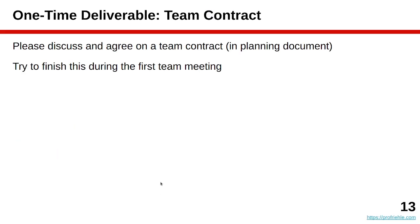The team contract is written in the planning documents; all links are available through the homework document. The team contract is a deliverable of the first week, but I recommend you finish it already in the first team meeting — meaning on the first day of the first week.